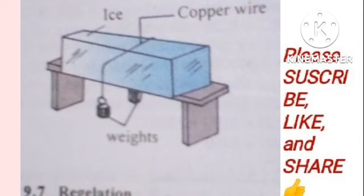Let's talk about one effect of pressure and impurities on freezing points — this effect is known as regelation. When an ice block melts, it's because there is sufficient pressure applied to it. If you place an ice block on a hard surface and exert pressure by suspending some weights above the ice using a copper wire, there is a region of high pressure at the point where the weight is suspended.